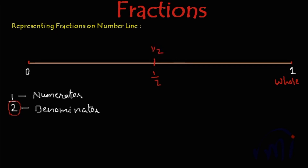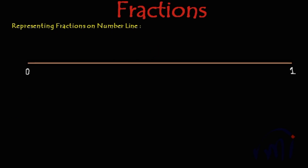Now suppose if you want to represent 1 by 3 on this number line. We have to see the denominator. The denominator tells us how many equal parts you have to make. Here the denominator is 3, so we will divide this 0 to 1 number line into 1, 2, and 3 equal parts. Below the bar we will write 3 on both the places.